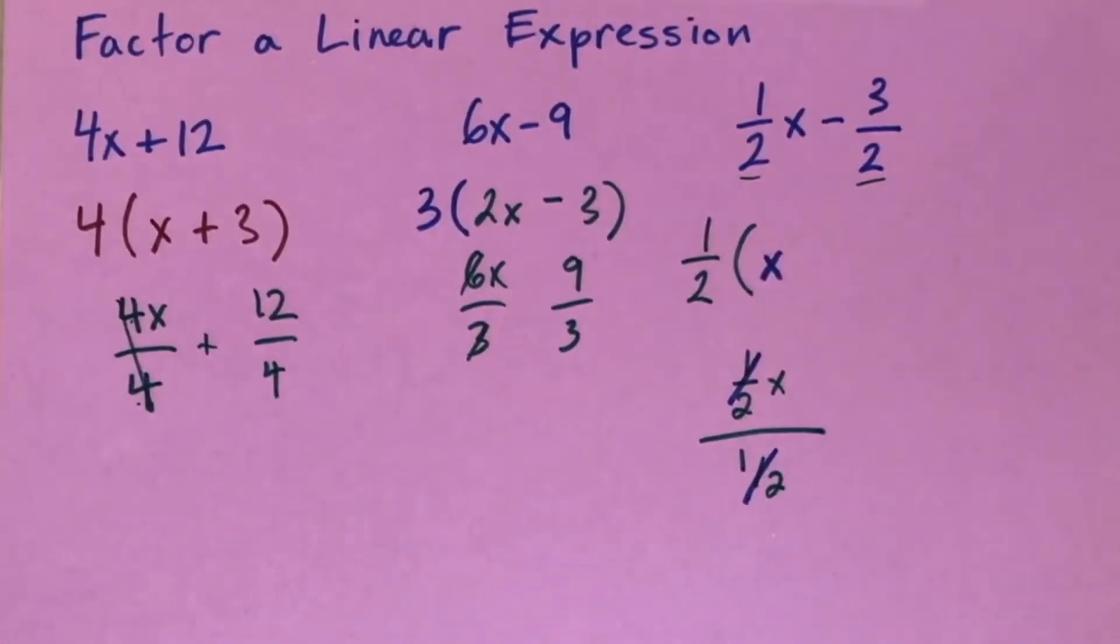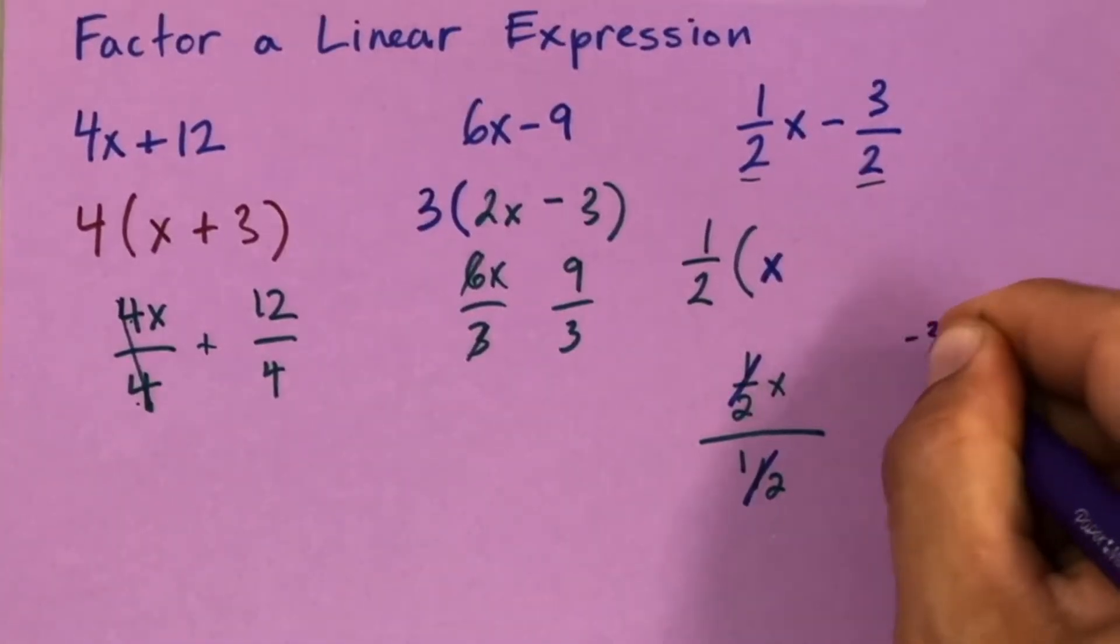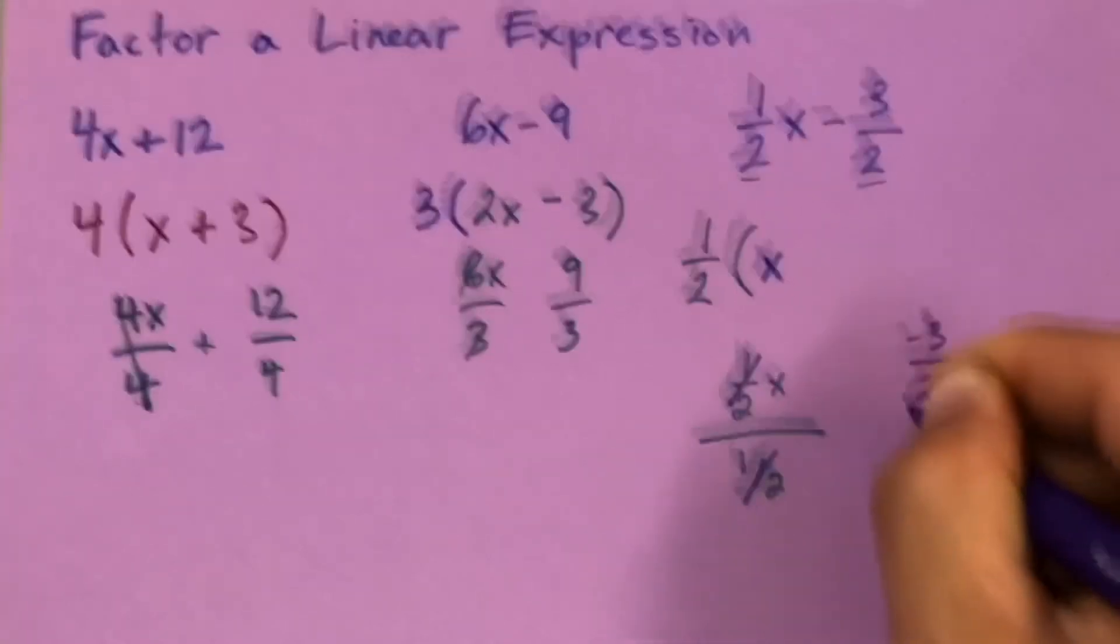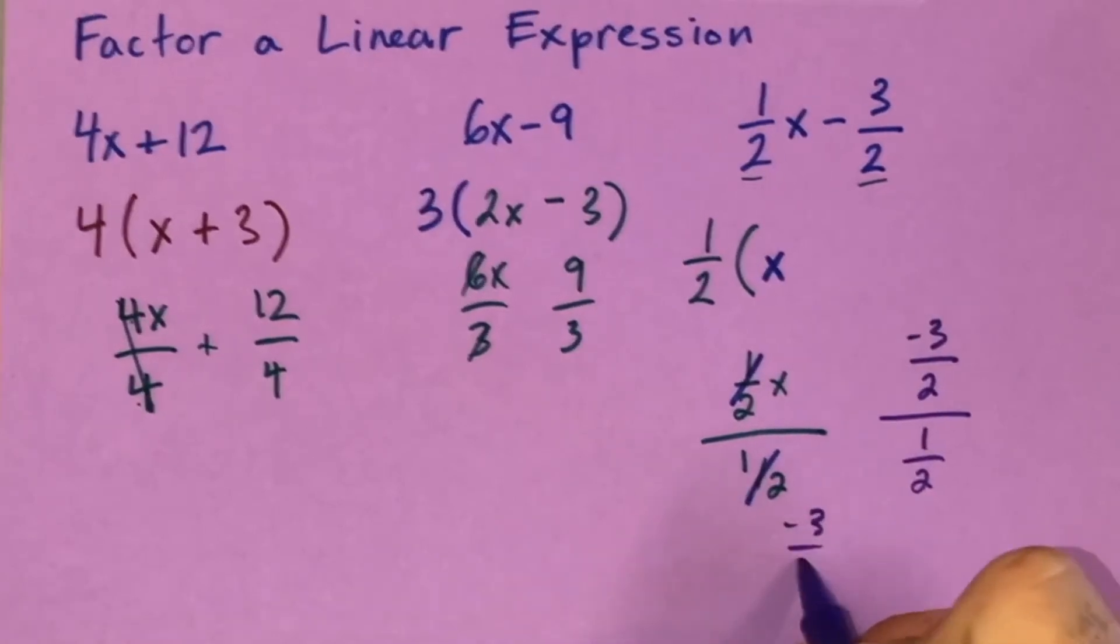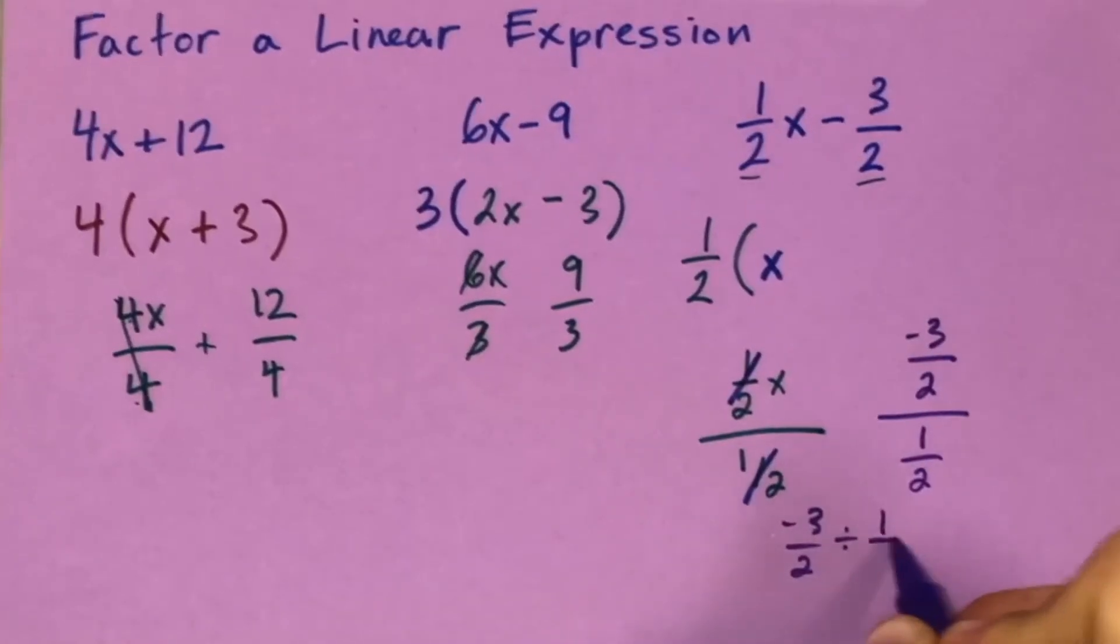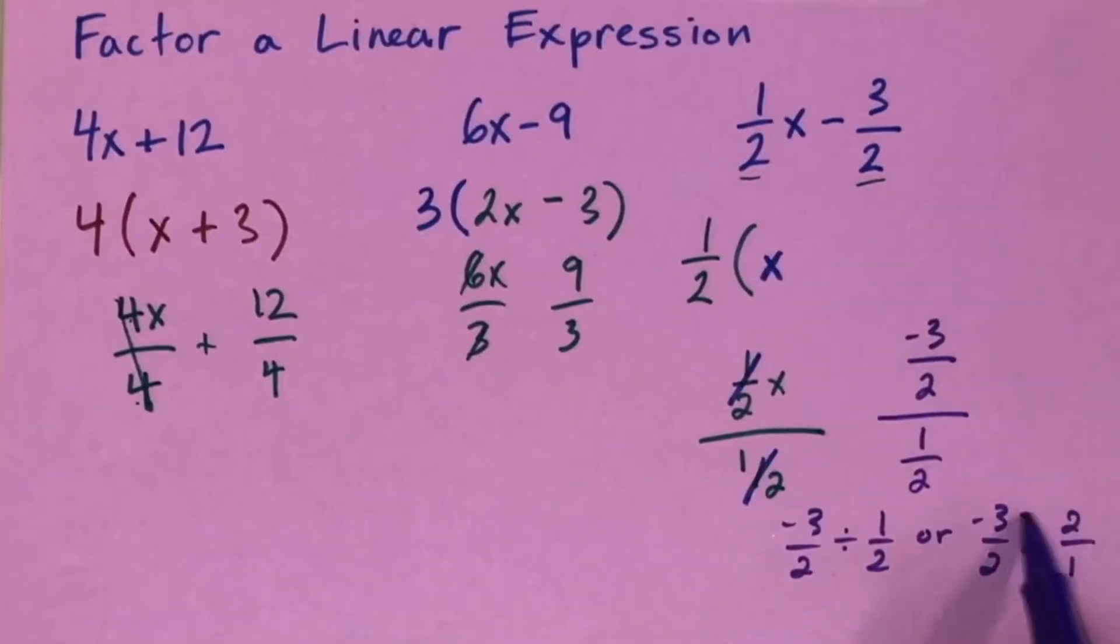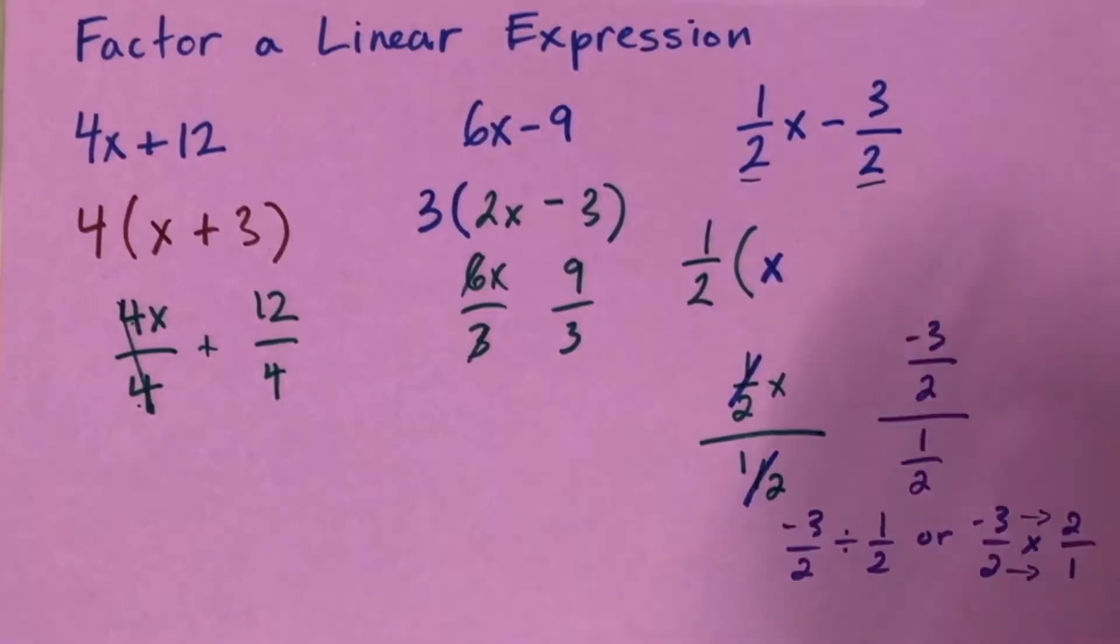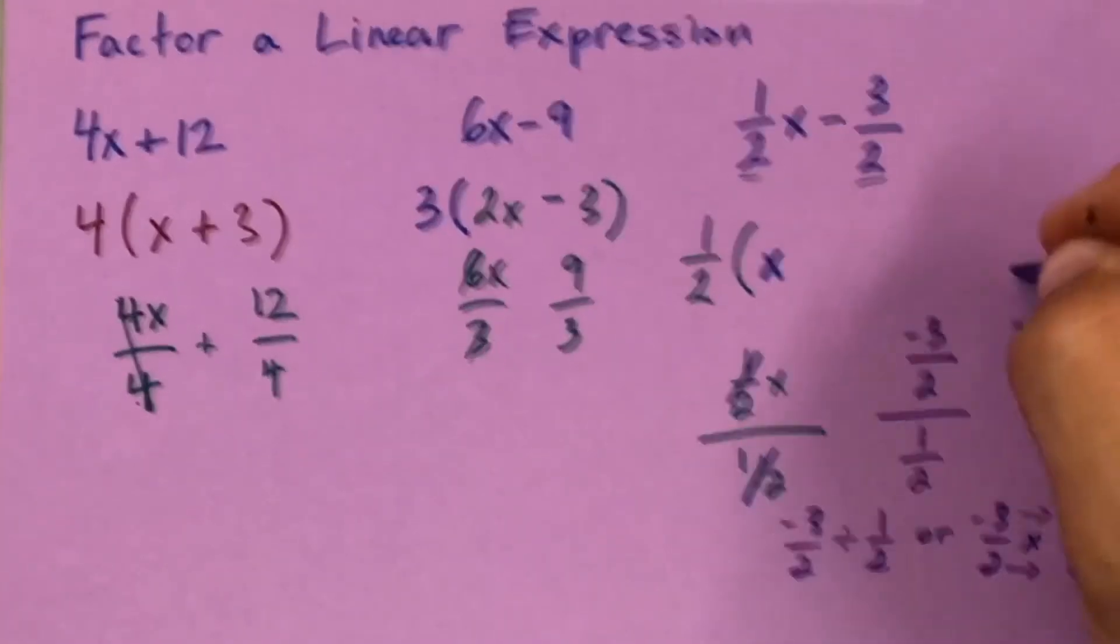A little bit different though once we get to the three half. Basically you're doing negative 3 halves divided by one half, which could be written as negative 3 halves divided by one half, or negative 3 halves times 2 over 1. Now what we would do here is just multiply across and we would get negative 6 over 2, which could be...